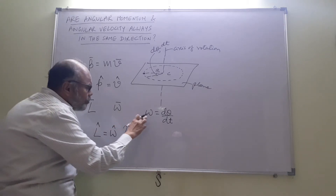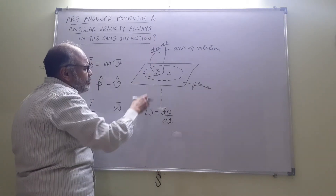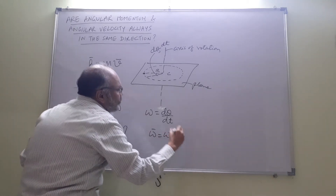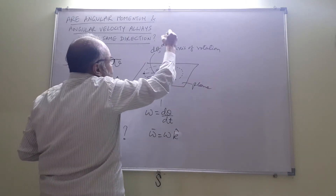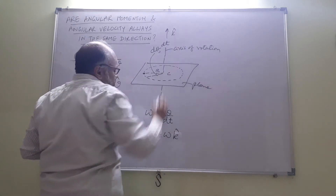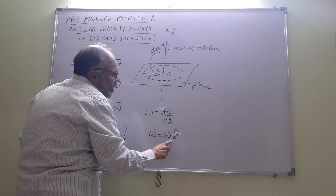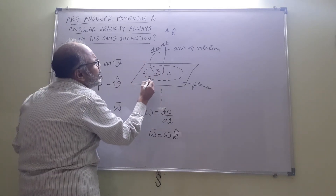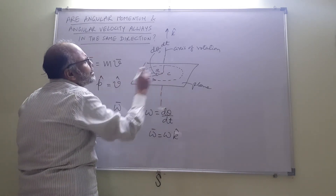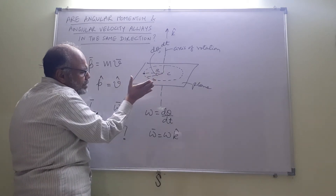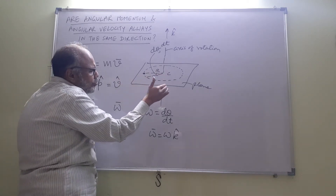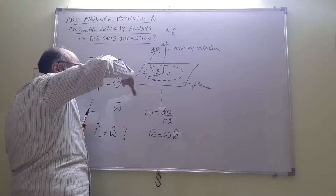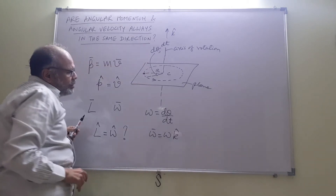The direction of omega is defined to be axial. So vector omega is ω·k-cap. If this is the z-axis, the direction of omega is ω·k-cap. Here we have assumed anti-clockwise sense: curl your fingers along the direction of motion and the thumb gives the direction of omega. For a clockwise direction, omega would be −k-cap.